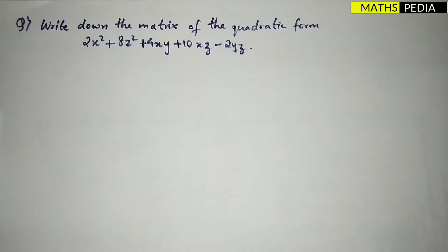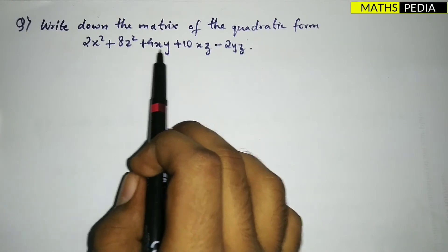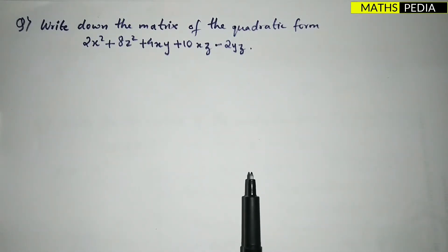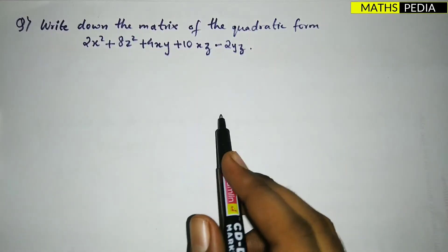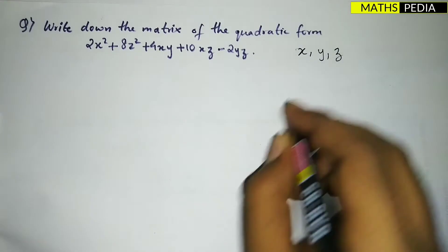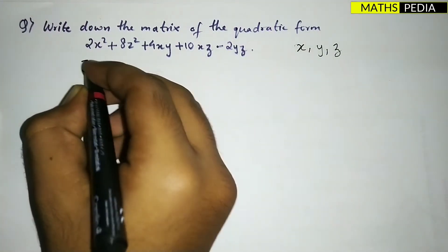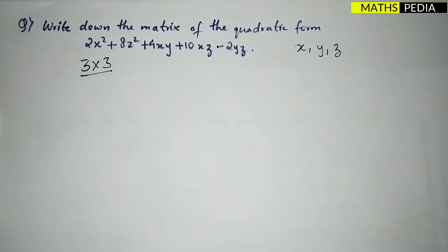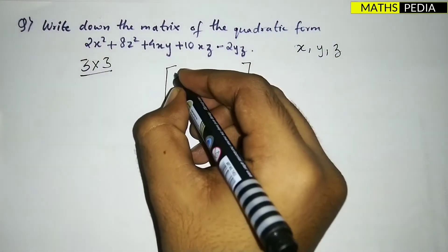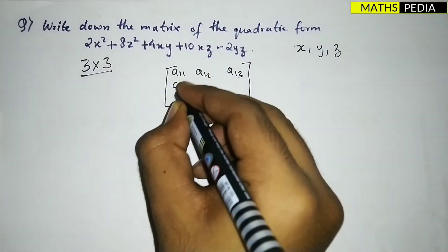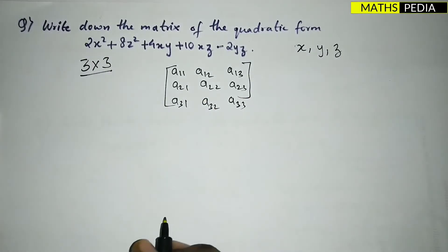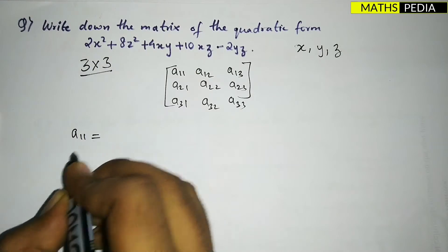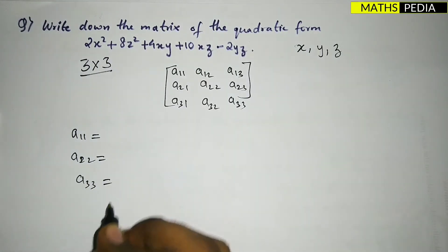Now let's try a 3×3 example: write the matrix of the quadratic form 2x² + 8z² + 4xy + 10xz − 2yz. The variables involved are x, y, and z — three variables — so the matrix will be of order 3×3 and will also be symmetric. The diagonal elements a₁₁, a₂₂, a₃₃ are the coefficients of x², y², and z² respectively.